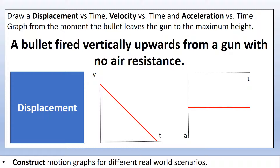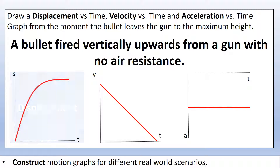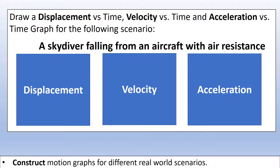Using the same principle: velocity is the gradient of a displacement-time graph. We can see the velocity is always positive but decreasing to zero, so the gradient of the displacement-time graph should always be positive and decrease to zero. That gives us a curve that increases and flattens out. Those are the three graphs for the first scenario.